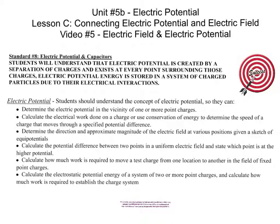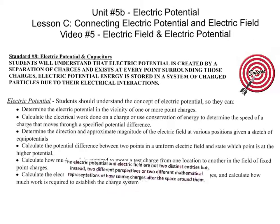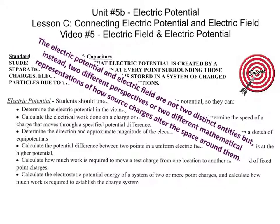Back in Unit 5A, we learned how source charges create an electric field around them. In this unit, we have found that source charges also create an electric potential everywhere in the space around them. The electric potential expresses the work that a source charge distribution does on a point charge as the point charge's position changes. The electric field expresses the force a source distribution exerts on a point charge, and the work done is proportional to the force exerted. So electric potential is related to electric field. In this video, we'll build on this idea and find that electric potential and electric field are not two distinct entities, but instead two different perspectives — two different mathematical representations of how source charges alter the space around them.